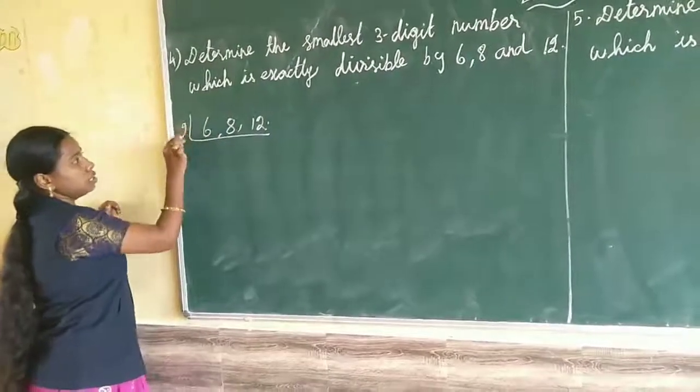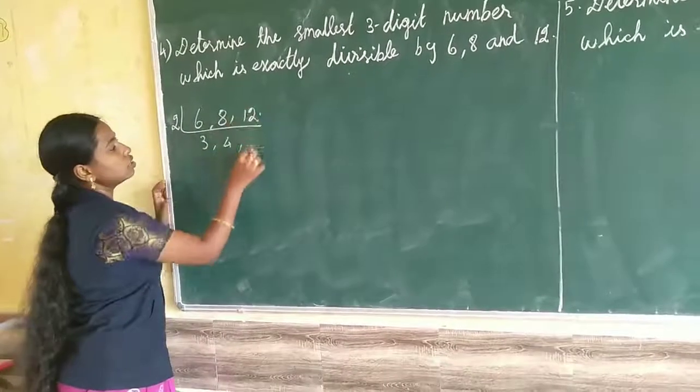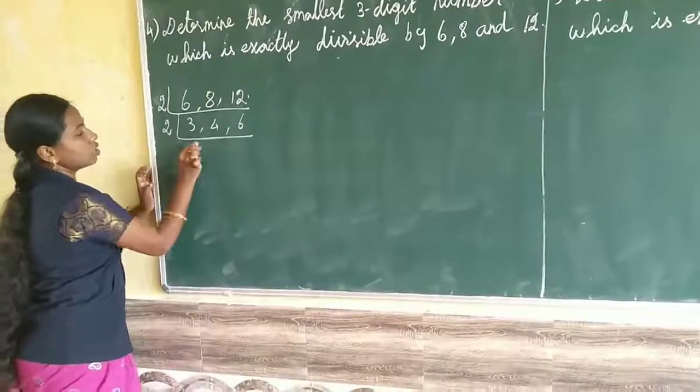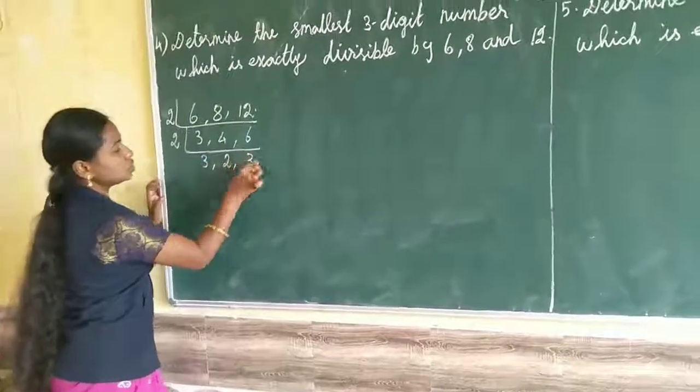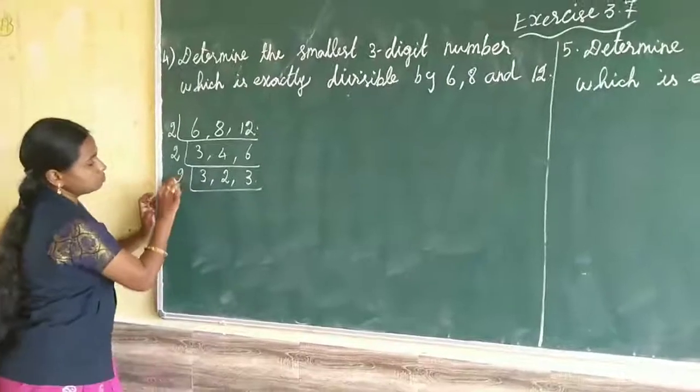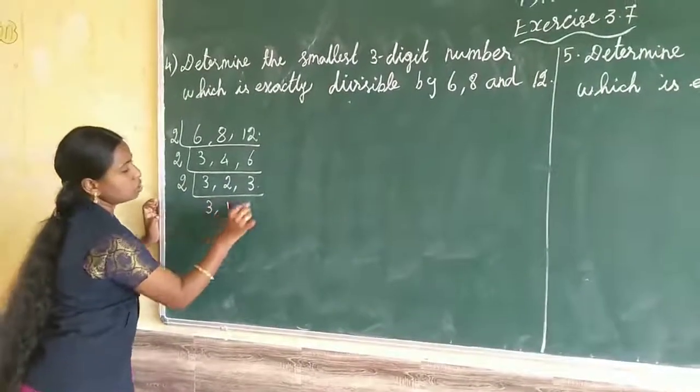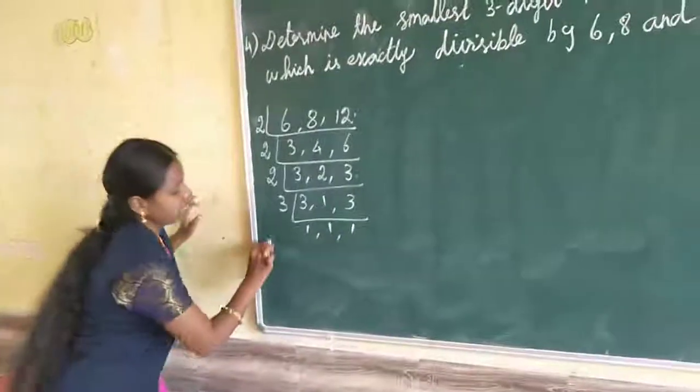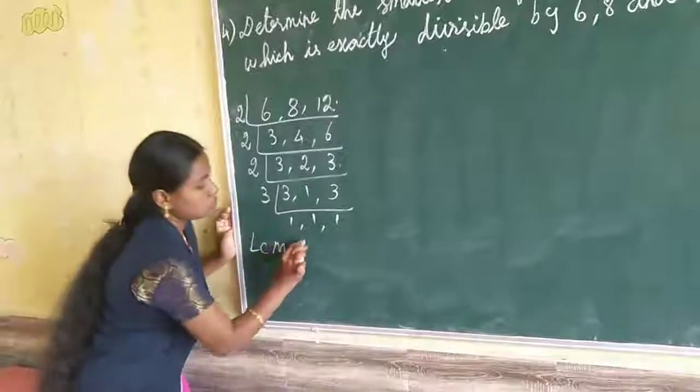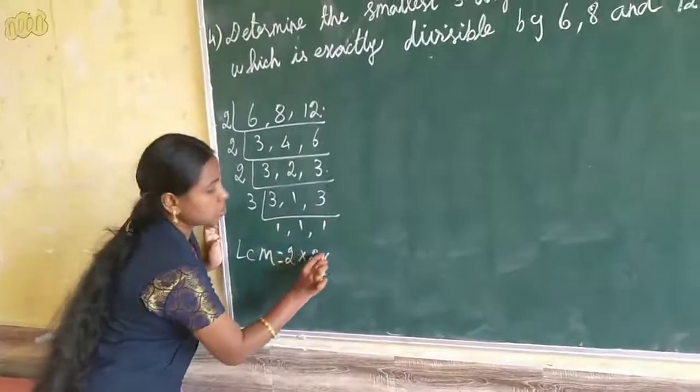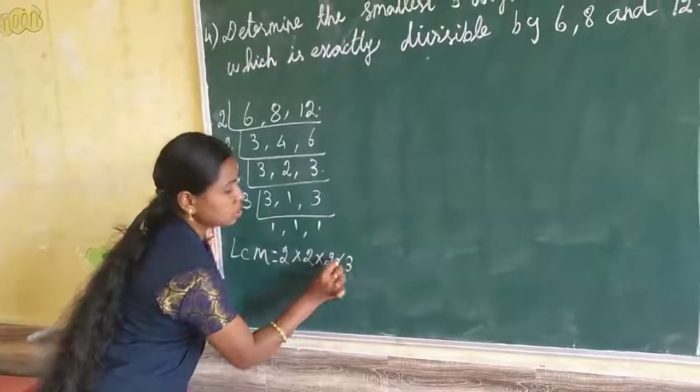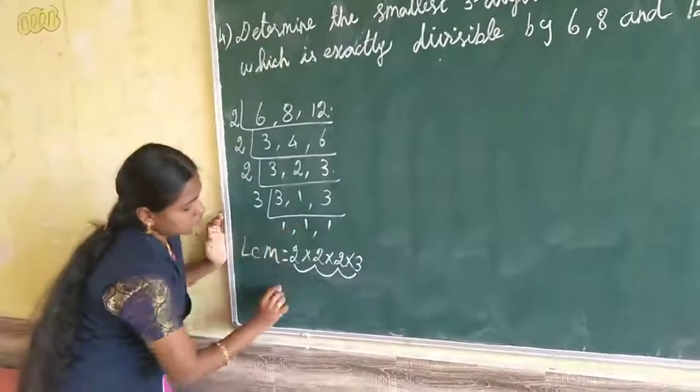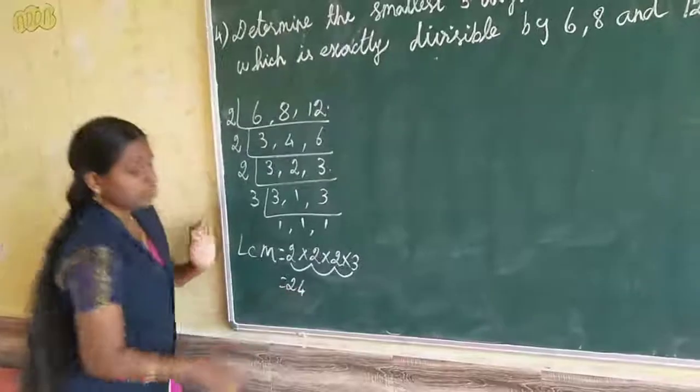6, 8 as well as 12. I am going to do it in two tables. So, 3, 4, 6. Again two tables, 3, 2, 3. Again two tables, 3, 1, 3. Three table, 1, 1, 1. LCM, 2 into 2 into 2 into 3. 2 is 4, 4 is 8, 8 into 3, 5 is 3. So, 15 means, 8, 40 equals 0, carrying in 4, 8, 4. So, 120.